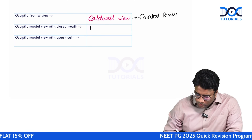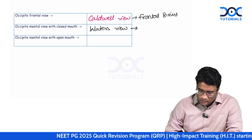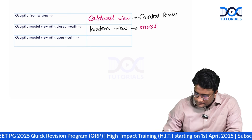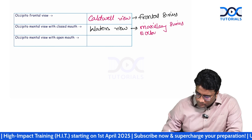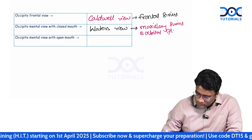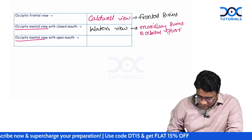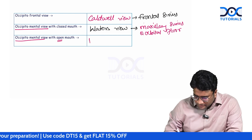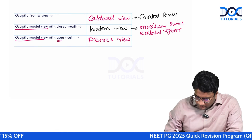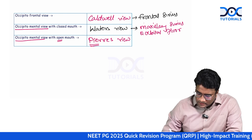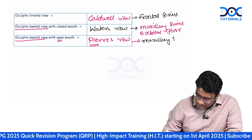An occipitomental view with a closed mouth is called the Waters view, which is used for the maxillary sinus and also the orbital floor. The same occipitomental view but with an open mouth is called Perry's view — remember PEP, so open mouth is Perry's view. This shows part of the maxillary and sphenoid sinuses.